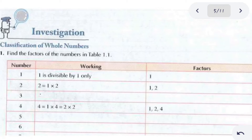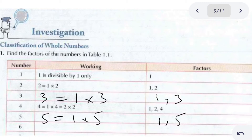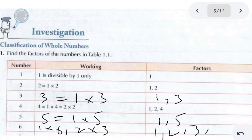In this activity we will find the factors of a number and classify it as prime or composite. The factors of 3 are 1 and 3. The factors of 5 are 1 and 5. The factors of 6 are 1, 2, 3, and 6 — since 6 = 1×6 and 2×3.